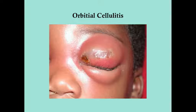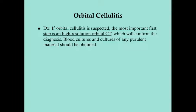For diagnosis, if orbital cellulitis is suspected, the most important first step is a high-resolution orbital CT. This confirms the diagnosis. Because orbital cellulitis is more severe, get blood cultures and cultures of any purulent material.